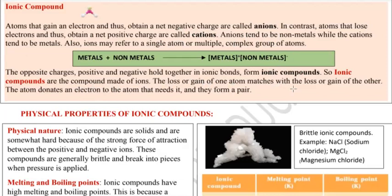The loss and gain of one atom matches with the loss and gain of the other. The atom donates an electron to the atom that needs it and they form a pair. The anion has a net negative charge meaning it has an extra electron, and the cation has a net positive charge meaning it has one electron less. These cation and anion get ionic bonds and form a compound. This donation and sharing becomes a pair, and the ionic compound is formed.